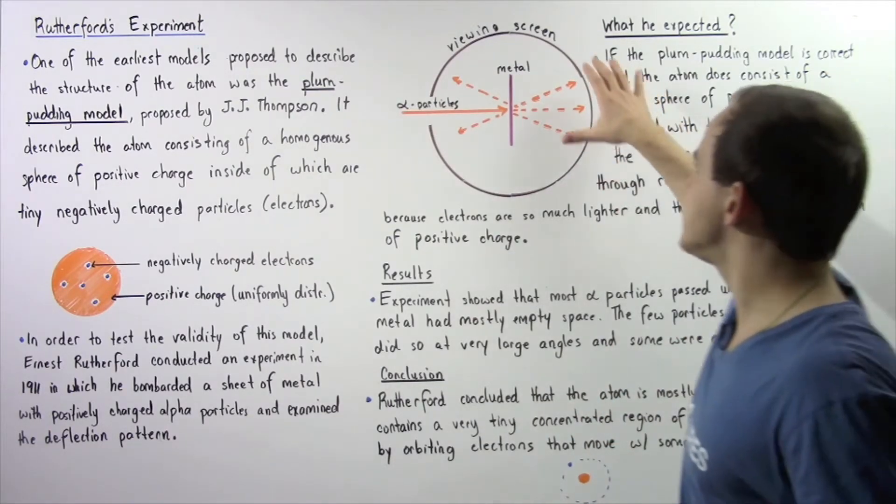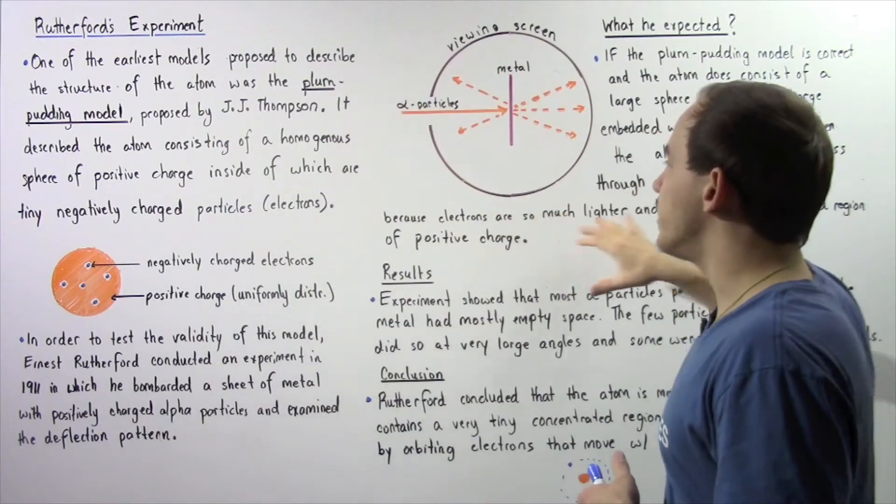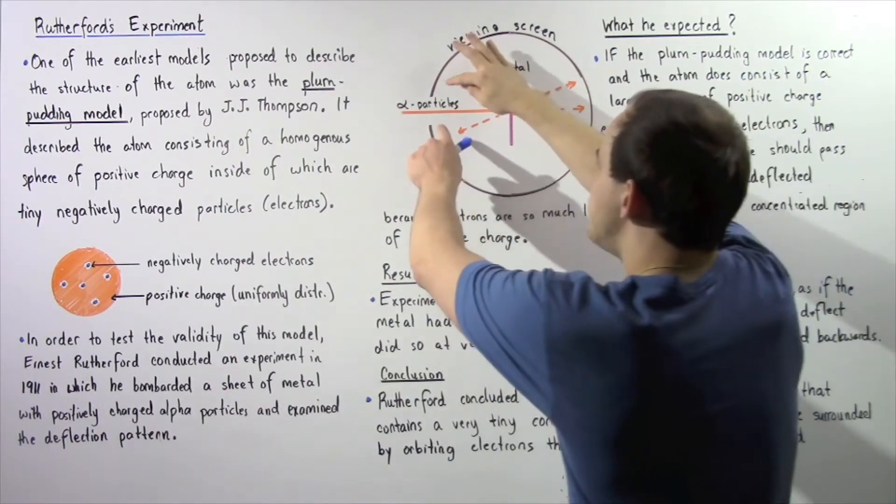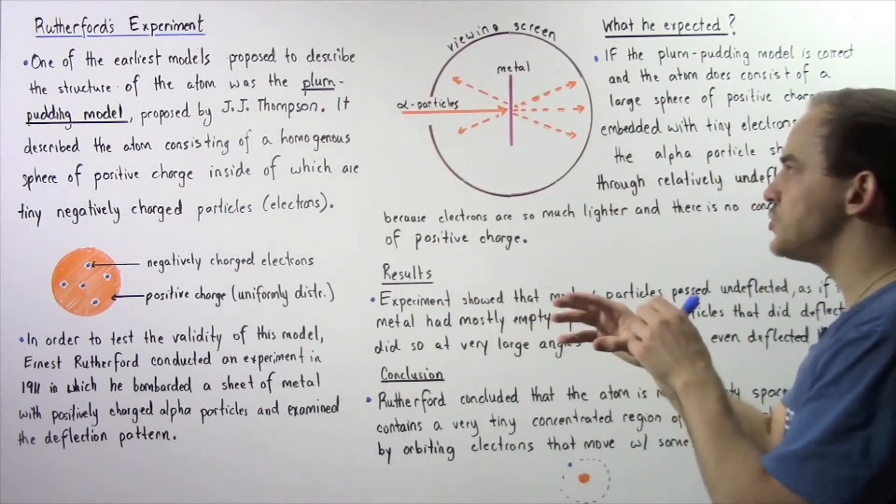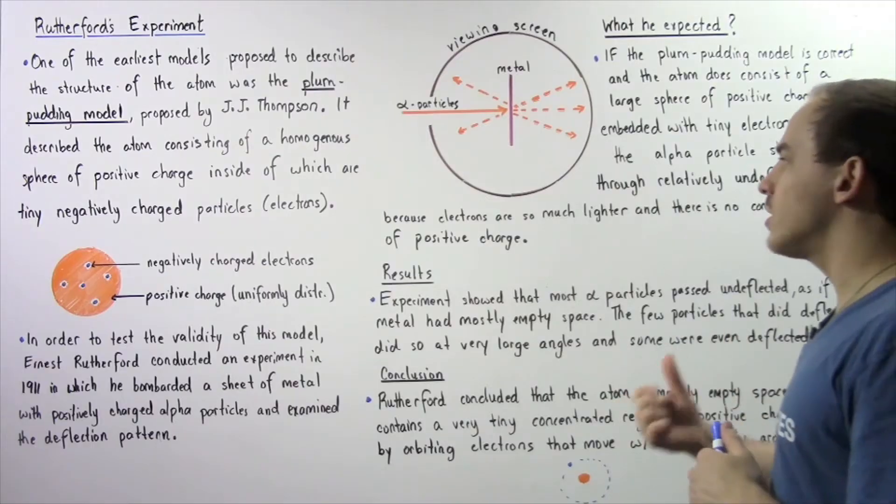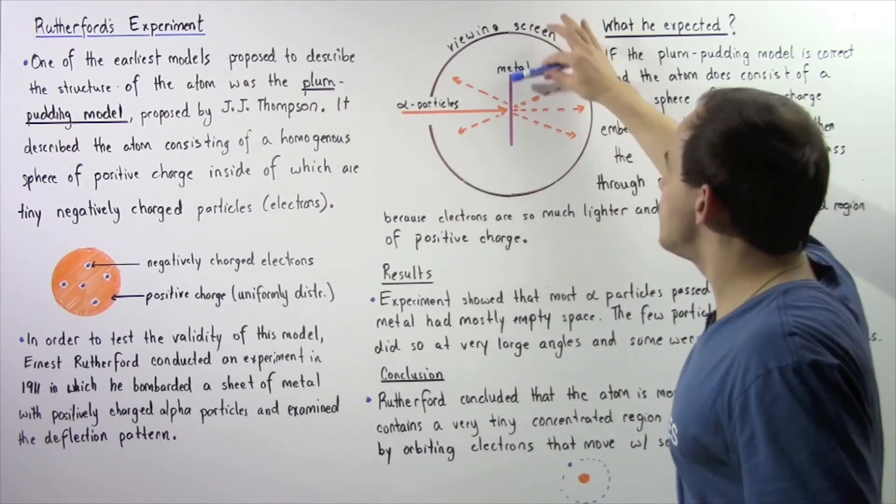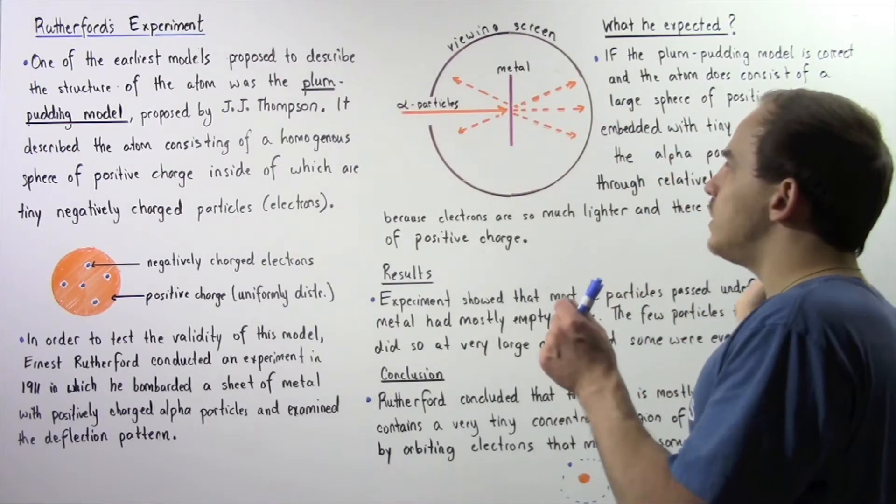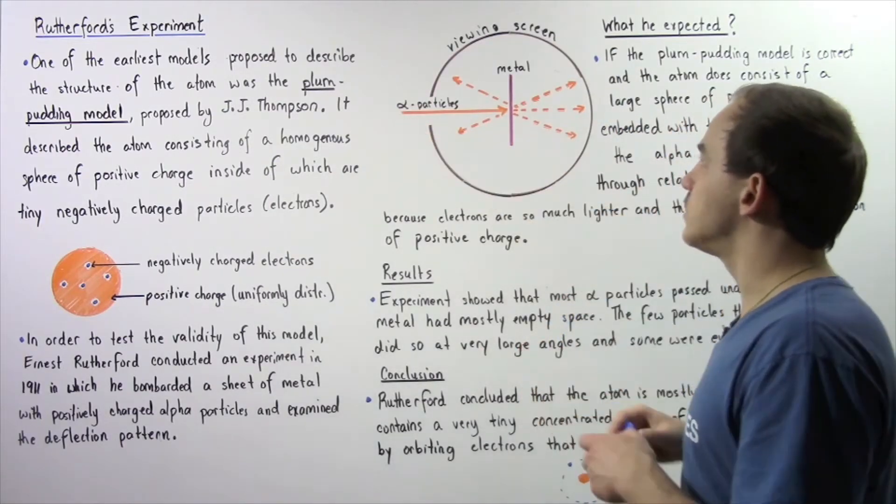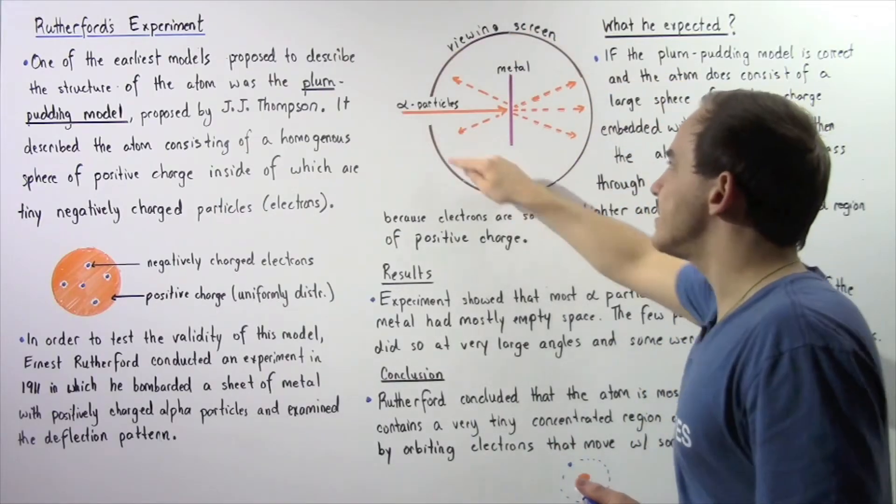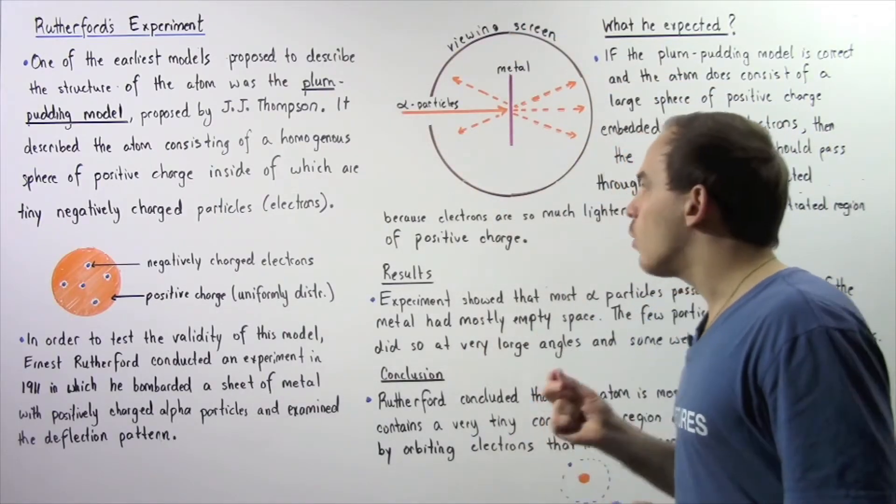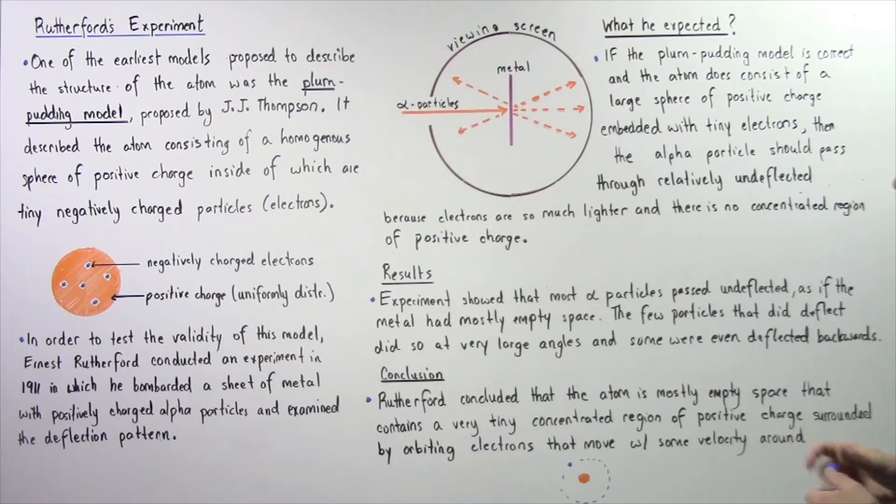The experiment is basically summarized in the following diagram. We have a very small opening through which our alpha particles are allowed to pass. This is the metal that we bombard our alpha particles with, and this is the viewing screen that is able to detect our deflected alpha particles.